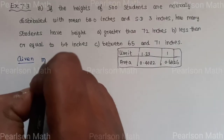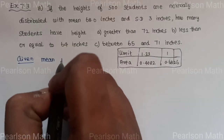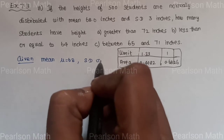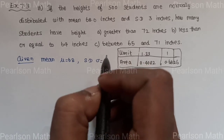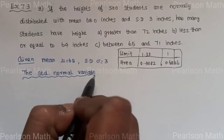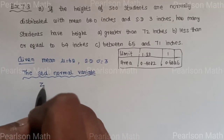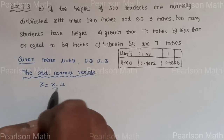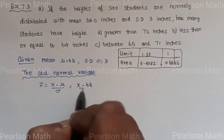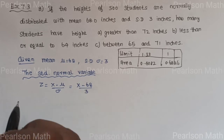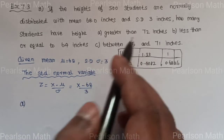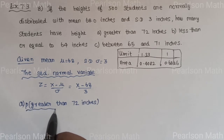Given: mean μ = 68, standard deviation σ = 3. The standard normal variation formula is Z = (X − μ) / σ = (X − 68) / 3.